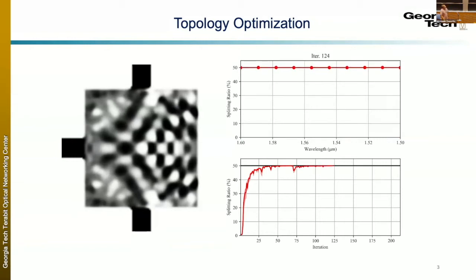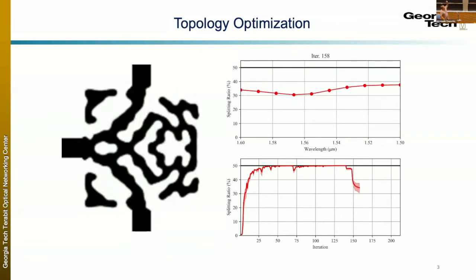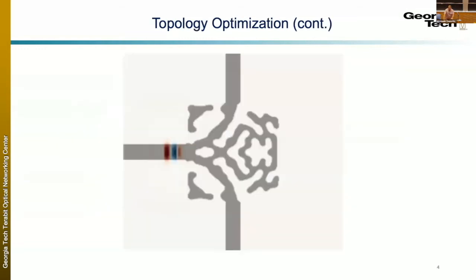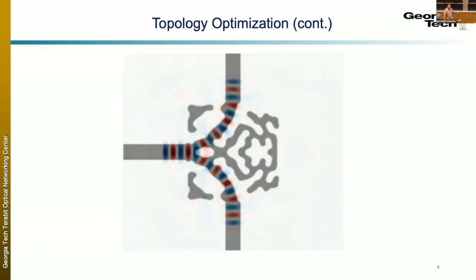Soon the optimizer faces design rule constraints — forcing the design to not only be binary but also adhere to a prescribed minimum feature size from a foundry specification. The final design is completely binary, satisfies all fabrication constraints, and has extremely broadband performance. It only took about 210 iterations — roughly 20 minutes on a MacBook for this 2D case. Running a full-wave Maxwell solve confirms the design does split light in a 50/50 fashion, though there's not much field in the weird region on the right that we didn't design ourselves.